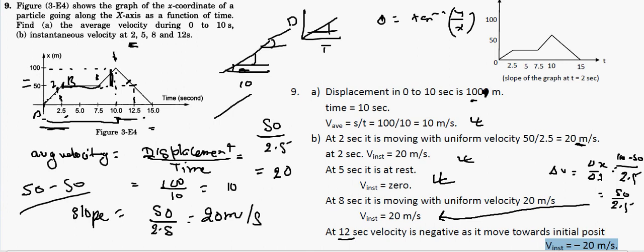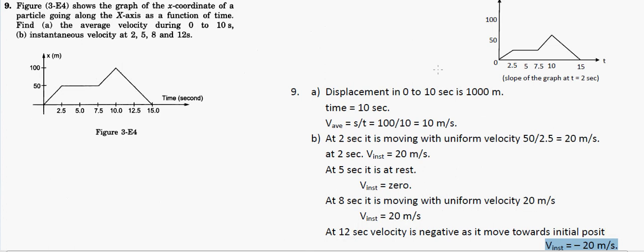To recap: on the graph, the first segment is a straight line so velocity is constant there. The flat middle section means velocity is zero. The decreasing part means velocity is negative. For t = 2 seconds, since I didn't know the exact value at t = 2, I used t = 2.5 where the displacement is 50 meters, and applied the slope formula to get the answer.